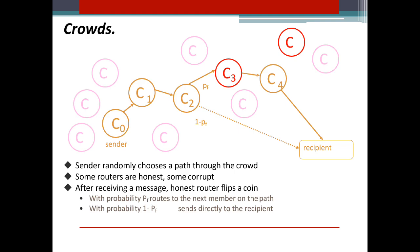This is the picture of Crowds, where C-not is the sender and C4, C2 are the recipients. The sender randomly chooses a path through the crowd, and some routers are honest and some are corrupt. After receiving a message, an honest router flips a coin: with probability PF, it routes to the next member on the path, and with probability 1-PF, it sends directly to the recipient.